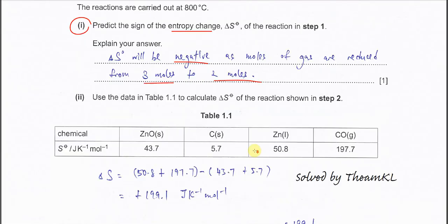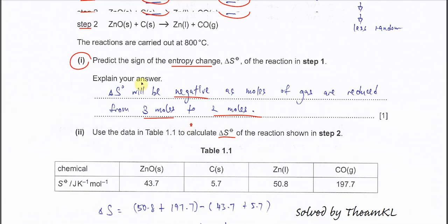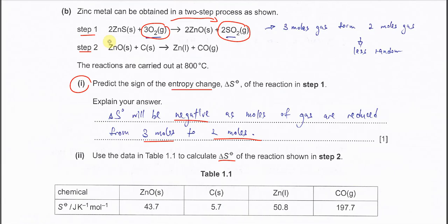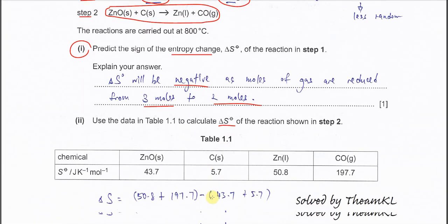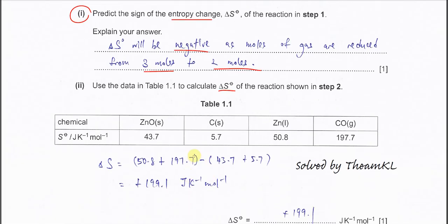Part two: use the data in table 1.1 to calculate the ΔS for the reaction in step two. We need to use the entropy molar entropy of the reactants and the products given in this table. Just use the sum of the products minus the sum of the reactants.